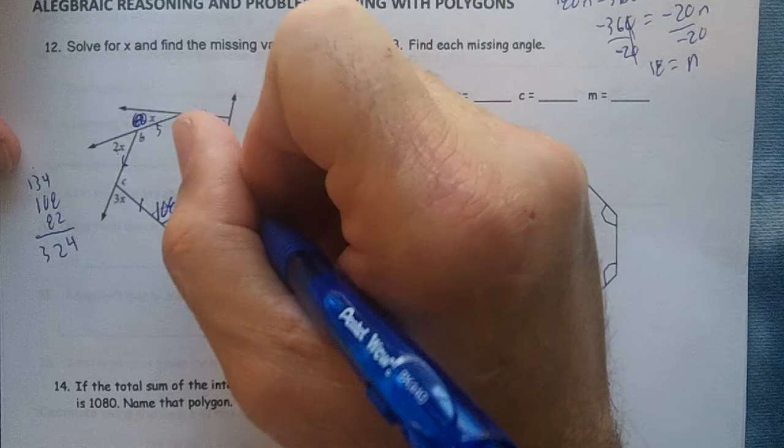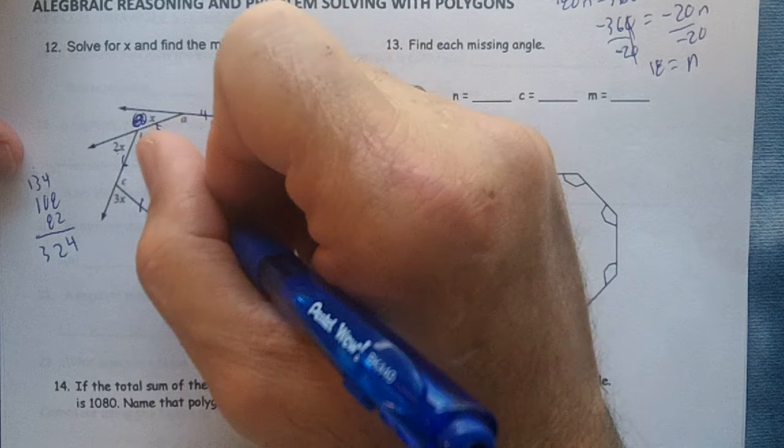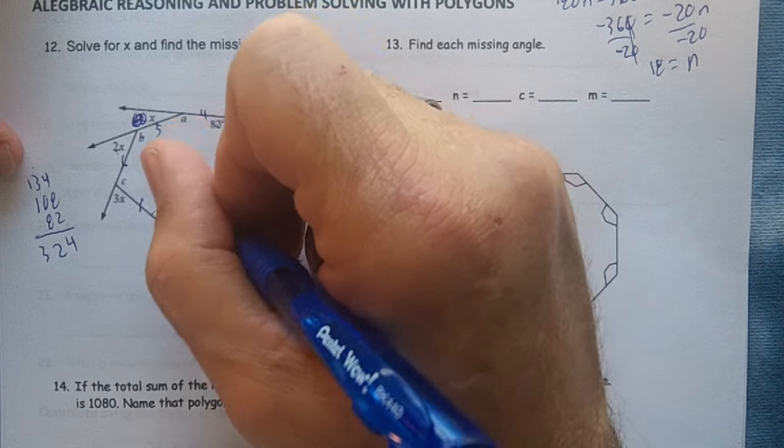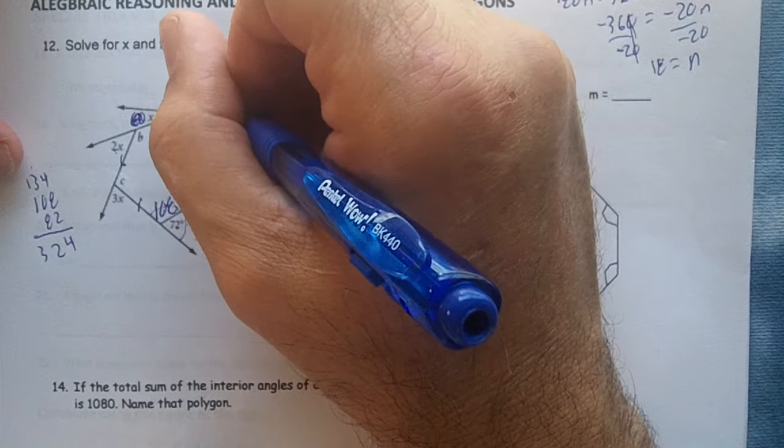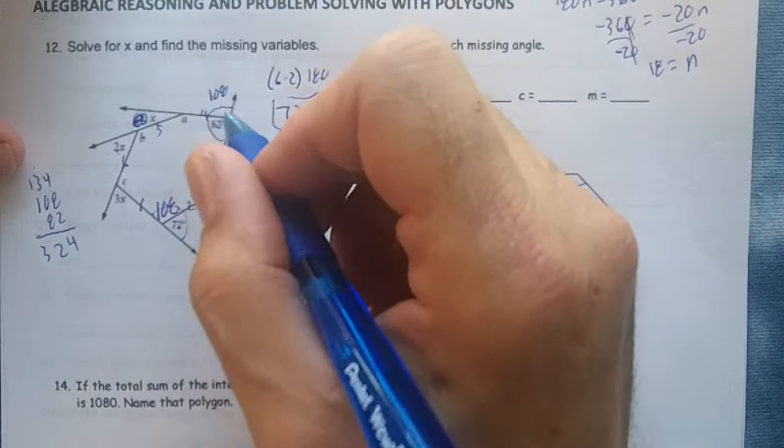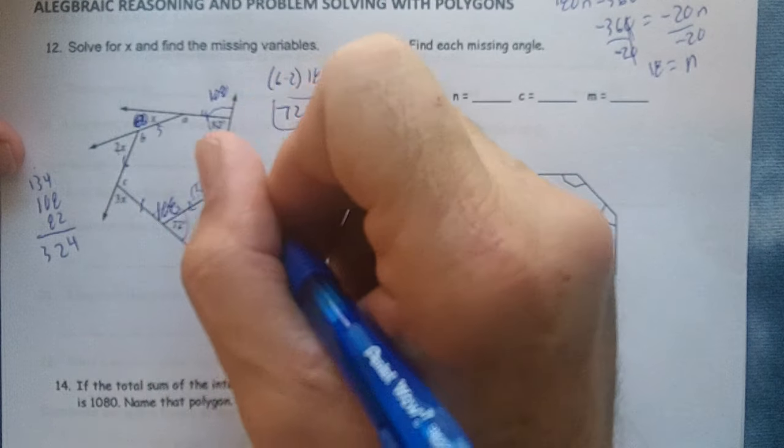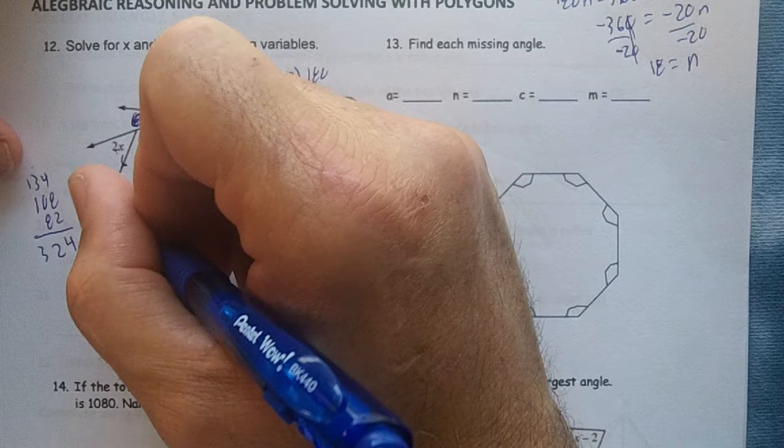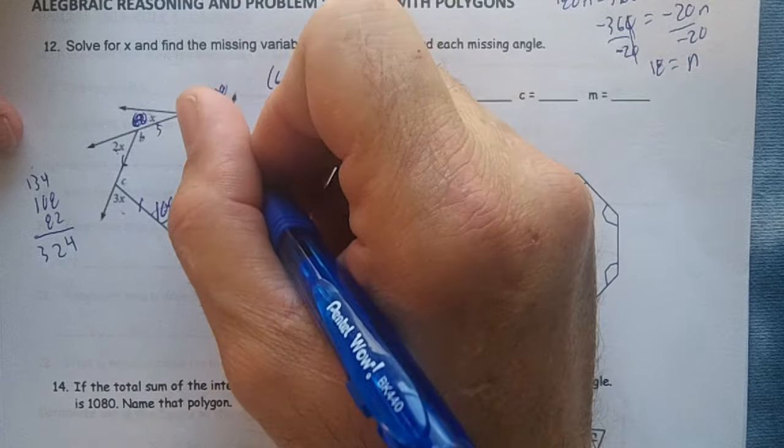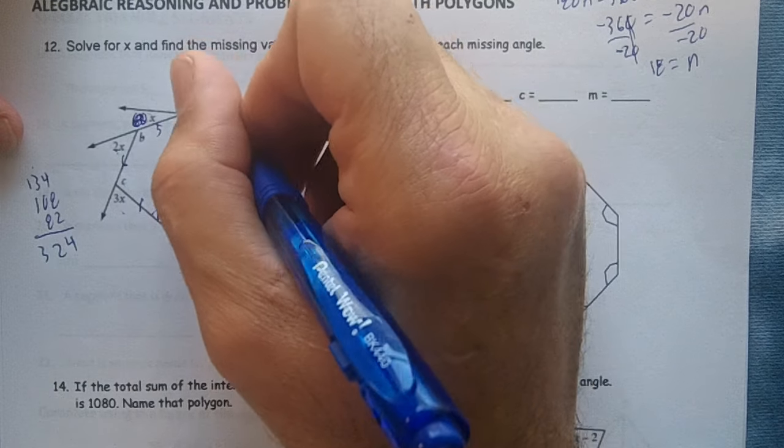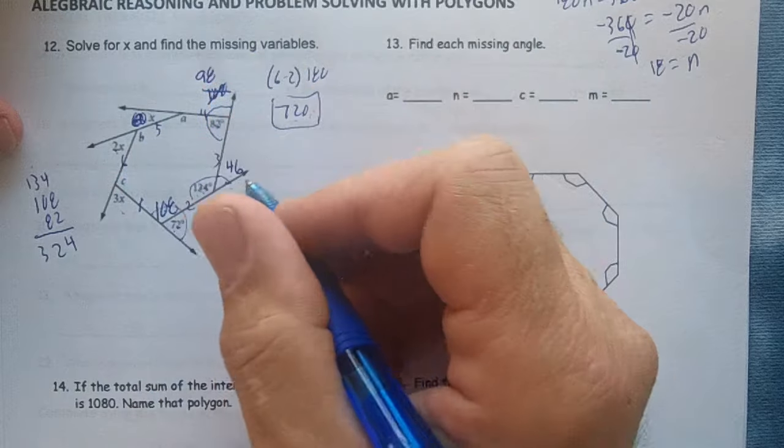This angle right here, we're going to have to get these on the outside first. This angle right here, these are supplementary. 134 added to 180 would be 46. These are supplementary, this would end up being 108. So now I know my exterior angles, don't I? I have 72, 46, 108, and I need to get these. So watch what I'm going to do here. Wait, that's not 108. This is going to be 98, and that's 108.